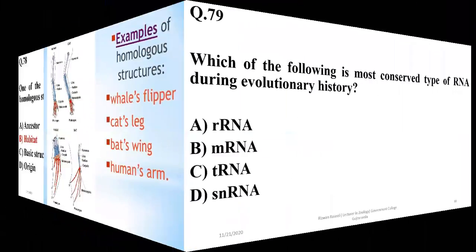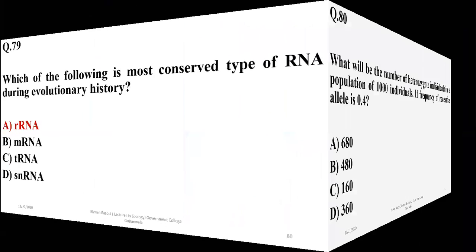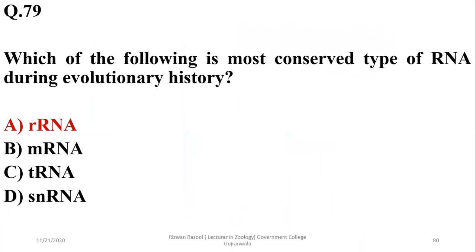Question number 79: Which of the following is the most conserved type of RNA during evolutionary history? It is ribosomal RNA, which has undergone the least changes compared to other types of RNA.